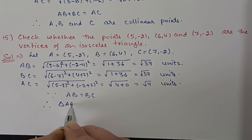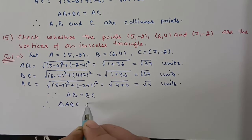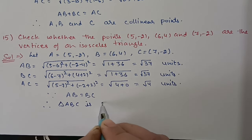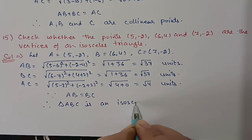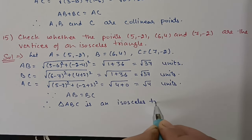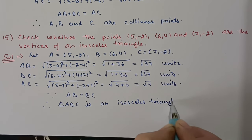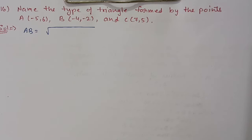Since AB = BC = √37, two sides are equal. Therefore triangle ABC is an isosceles triangle.